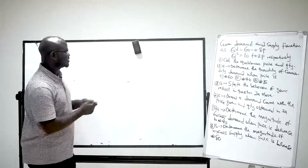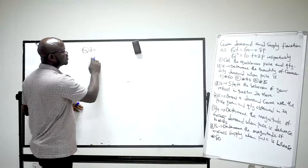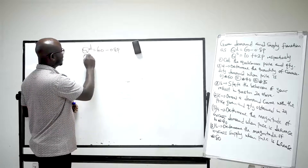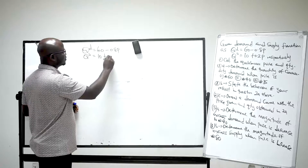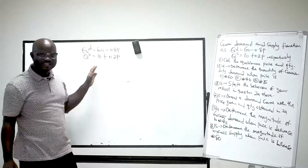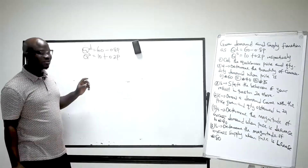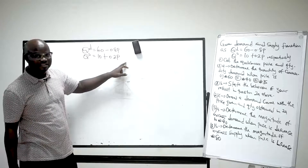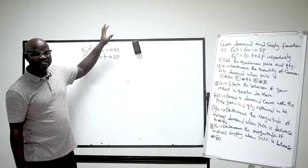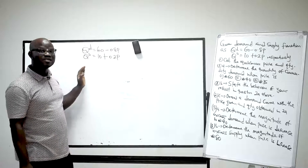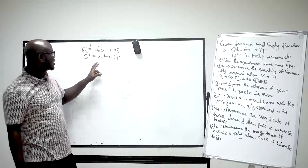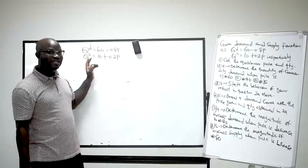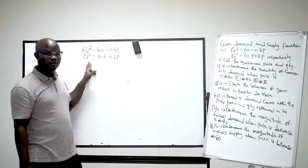Now let's start. We have QD = 60 − 0.8P and QS = 10 + P. You must ensure that the function given is in line with the law of demand and supply. The quantity demanded is negatively related to price — in line with the law of demand: when price decreases, quantity demanded increases, and vice versa. For supply, when price increases the quantity supplied also increases, and when price decreases the quantity supplied decreases — so the sign is in line with the law of supply.